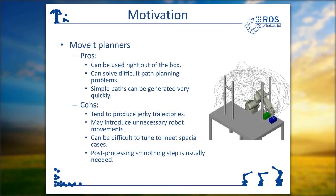Some challenges with current planners are that they tend to produce jerky trajectories or introduce unnecessary robot movements, making post-processing smoothing almost a requirement — though smoothing steps don't necessarily remove all inefficiencies in generated trajectories. Another challenge is that whenever there are special conditions within a planning problem, it's difficult to tune the behavior of these planners to meet those conditions.